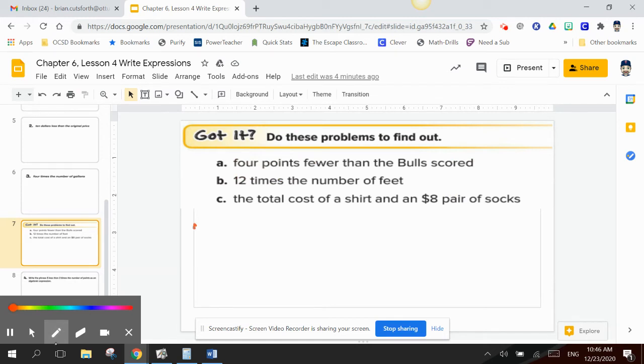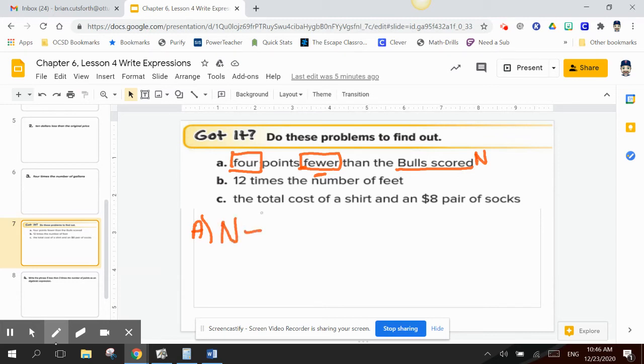So letter A. Four points fewer than the Bulls scored. Well, how many points did the Bulls score? We don't know. That's our variable. Four points fewer. Fewer tells me I need to subtract. And subtract what? Four. So I take what the Bulls scored, which is N, and I subtract four.